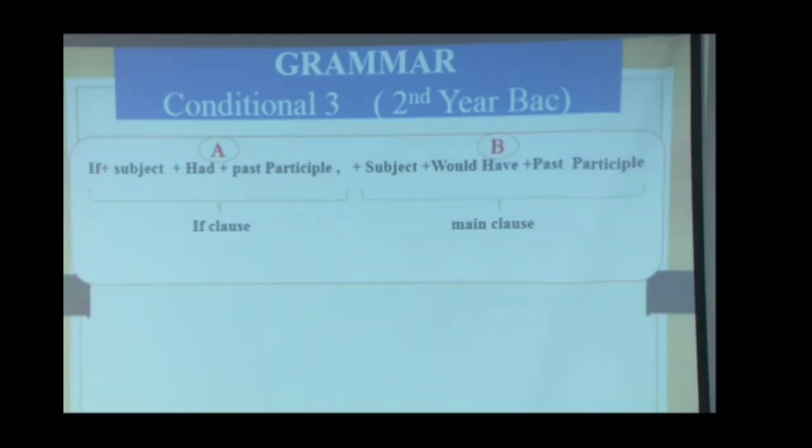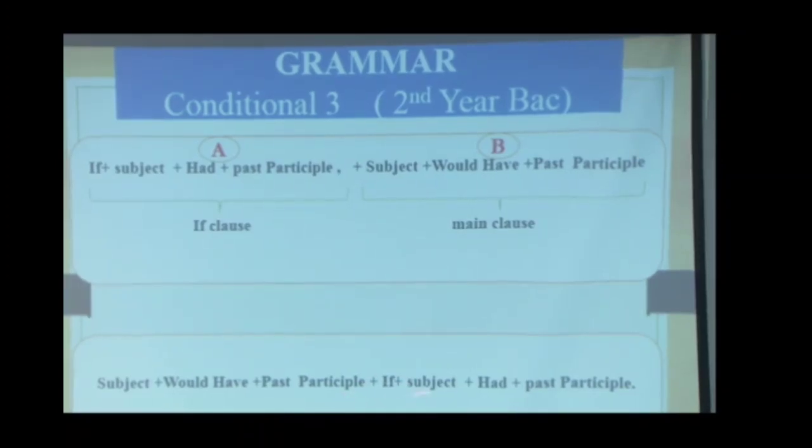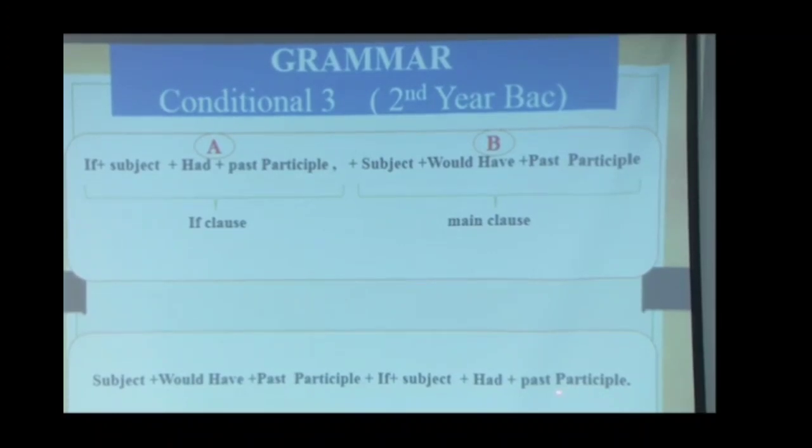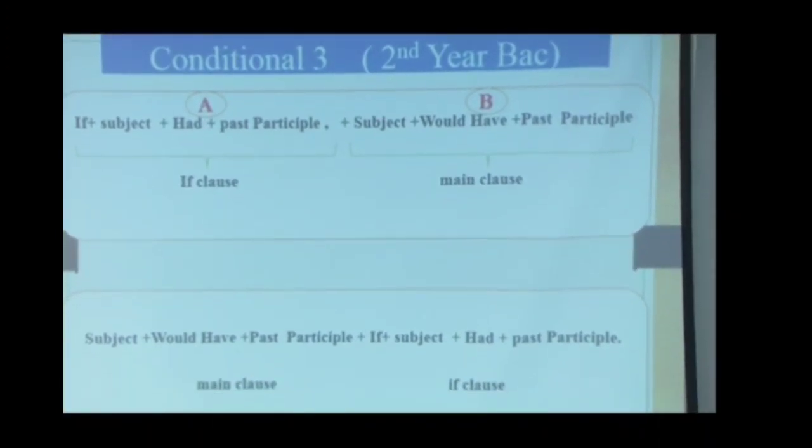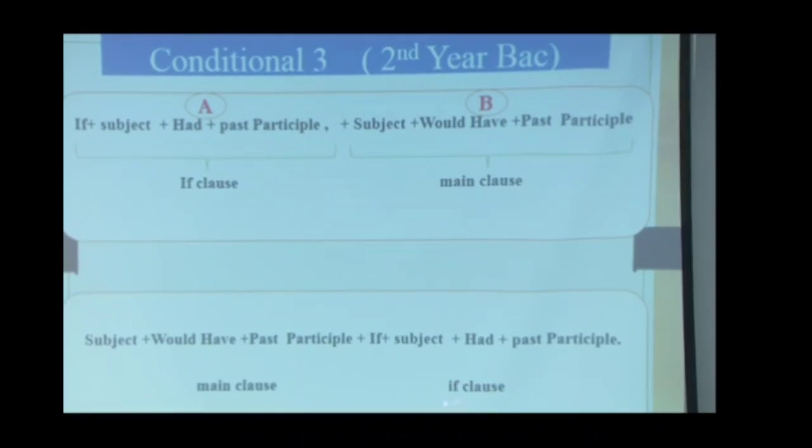If clause is A and main clause is B, but this is not the only form of conditional or the only order that takes the main clause and if clause. Let's look at the second rule. Subject plus would have plus past participle plus if plus subject plus had plus past participle. Here we start with the main clause and followed by the if clause. That is, B comes first and A comes second.